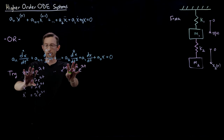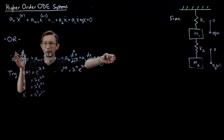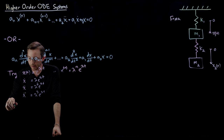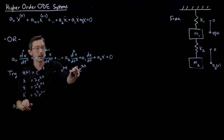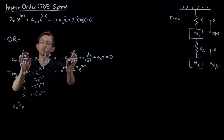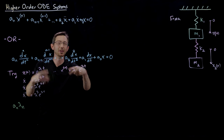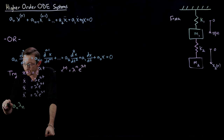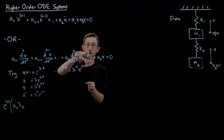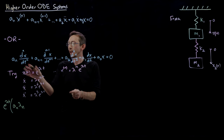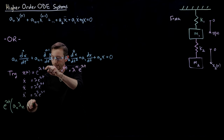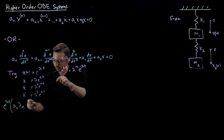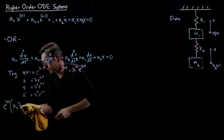If I take all of these expressions for the derivatives and plug them in, what I'm going to get is aₙ λⁿ e^(λt) — and every single term is going to have e^(λt). So I'm going to factor out e^(λt) and just look at the other part: aₙ λⁿ. And I want to clarify — that is λ to the power n, not λ subscript n. Much different.